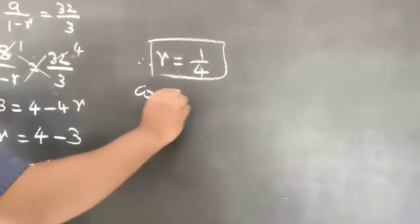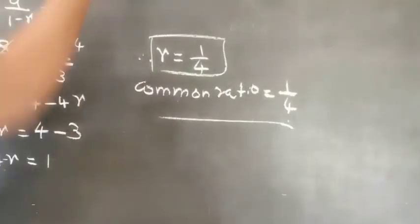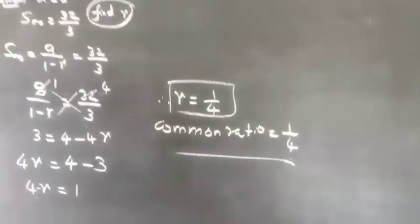That is, common ratio equals 1/4. 1/4 is the answer.